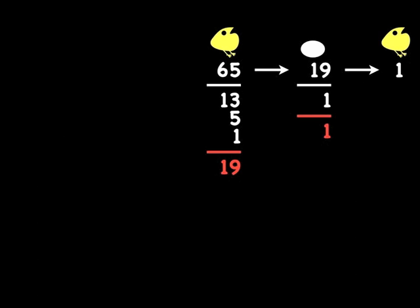So you might think that the sequence goes egg to chicken — that 65 is where we start. But actually we could go back further: is there a number that could produce 65? Indeed there is — it's 117. Let's look at all the proper divisors of 117.